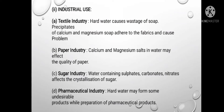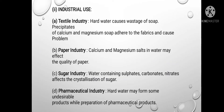Disadvantages of hard water in industrial uses. First, in textile industry: hard water causes wastage of soap, and precipitates of calcium and magnesium soap adhere to the fabric causing problems. Second, paper industry: calcium and magnesium salts in water may affect the quality of paper. Third, sugar industry: water containing sulphates, carbonates, and nitrates affects the crystallization of sugar. Fourth, pharmaceutical industry: hard water may form some undesirable products while preparing pharmaceutical products.